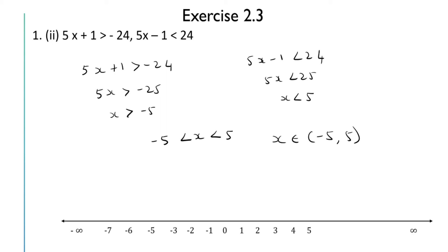If we want, we can graph this on the number line. Here x > -5 means from -5 going right, and x < 5 means up to 5 going left. The points common to these two is all points strictly between -5 and 5.